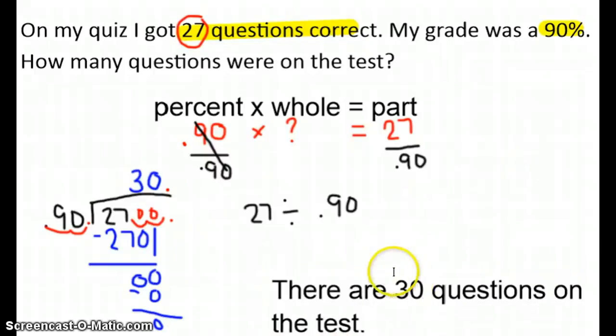The whole is 30. This is just the other way of doing it. So tomorrow we're going to look at a few different word problems. And you can choose whether you want to do percent times whole is equal to the part, or part over whole is equal to percent over 100. See you tomorrow.